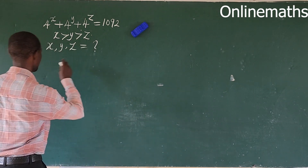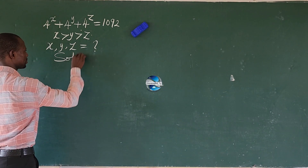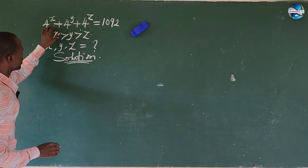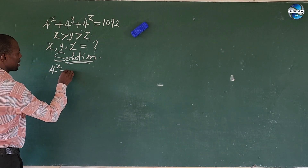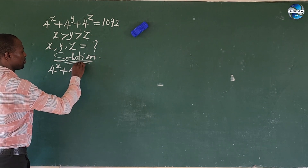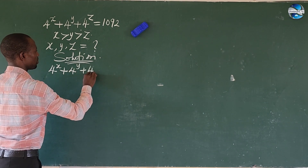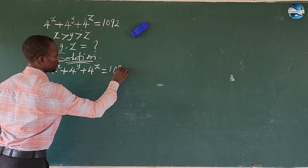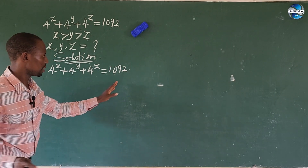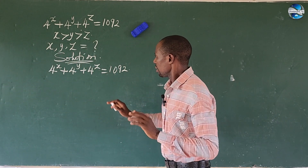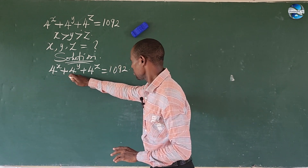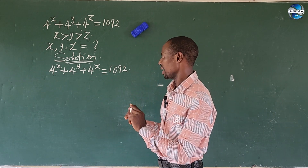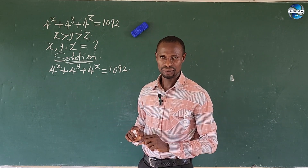Okay, so we take a solution. Look at the question here. We have 4 to the power of x plus 4 to the power of y plus 4 to the power of z equal to 1092. If you look at this question, we discover the base number here is 4. So what we do here is to factor one of them out.